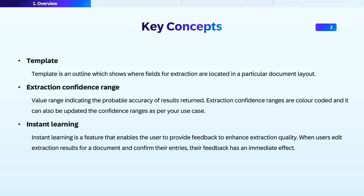Instant learning is an advanced feature available in Document AI Premium Edition, which allows you to incorporate user feedback to improve data extraction quality. If users, while evaluating, find a deviation in the extraction data, they can edit the extraction results and confirm the feedback, and it will be captured and leveraged in subsequent extractions.